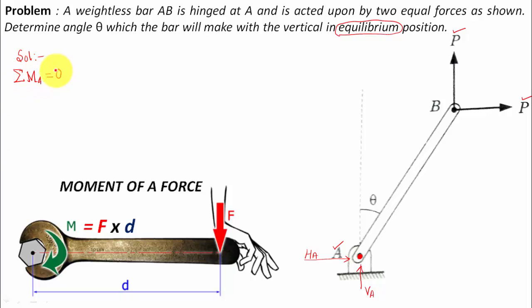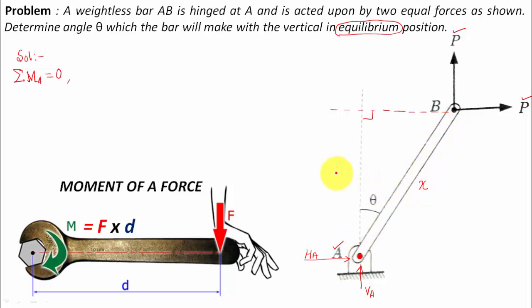Let's start by taking the moment of all forces about point A equal to zero. First, let me pick up the horizontal force P. This is the line of action of force P in the horizontal direction. If we drop a perpendicular from A onto the line of action of this force, and if theta is the angle and the length of the bar is x, then this perpendicular distance is x·cosθ.